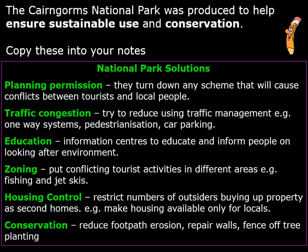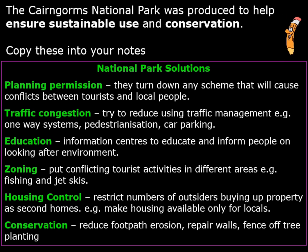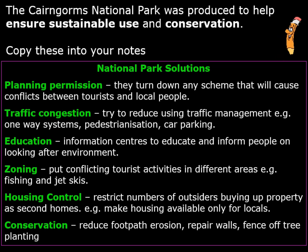To reduce traffic congestion, they try to introduce traffic management such as one-way systems, pedestrianisation, or large accessible car parking so people don't park inside the town. One of the most important things a National Park does is educate people — information centres are there to educate and inform people on looking after the environment and about activities going on in the National Park that day. Zoning means putting conflicting tourist activities in different areas — such as fishing and jet skis placed in different lochs so they don't interfere with each other.